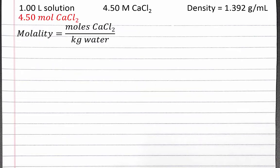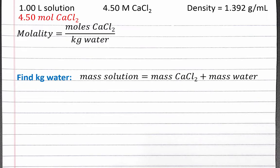Next, let's find kilograms of water. We know that the total mass of our solution is the mass of solute, which is calcium chloride, plus the mass of our solvent, which is water.